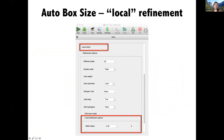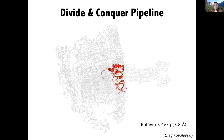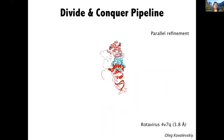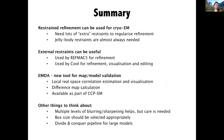There is also a divide-and-conquer pipeline developed by Oleg Kowalewski for cases where the structure is particularly large and you want to use parallel refinement. In this case, we cut out one particular chain and all the chains around it to have boundary conditions, use the local automatic box size calculation, refine each of these models in parallel, and then put it all back together at the end, which can help with computation.